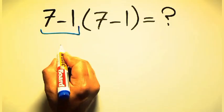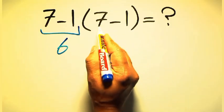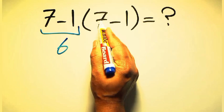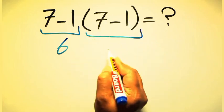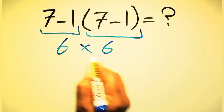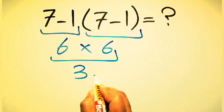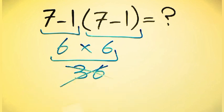7 minus 1 equals 6, and here again we have 7 minus 1, which is also 6. So 6 times 6 equals 36, but this answer is not correct,